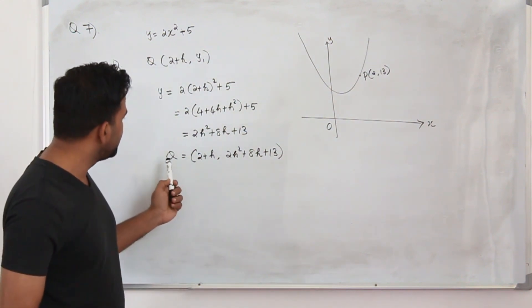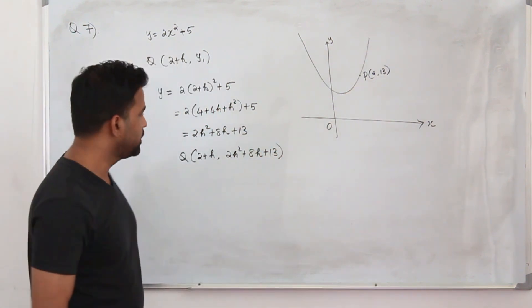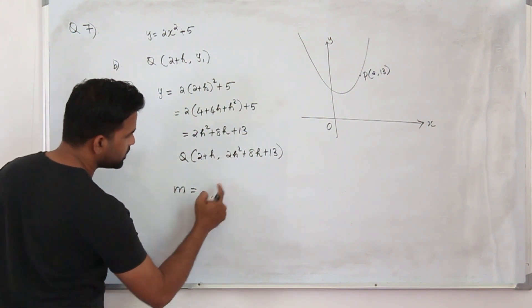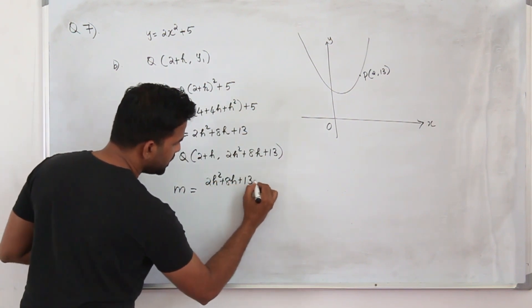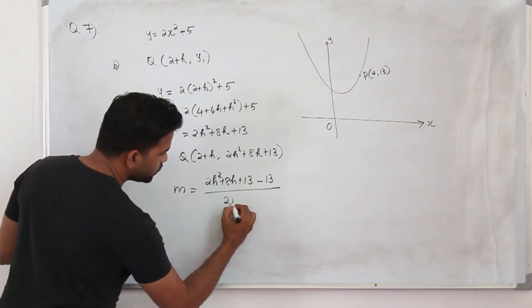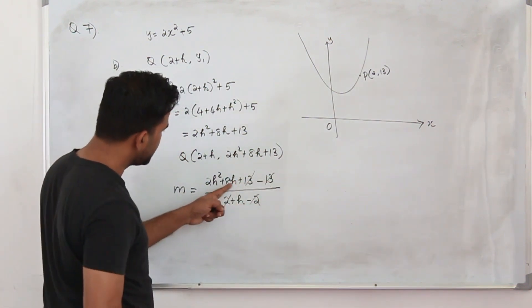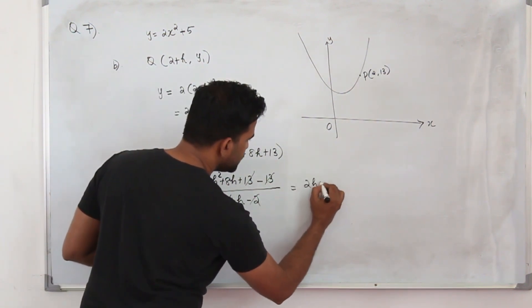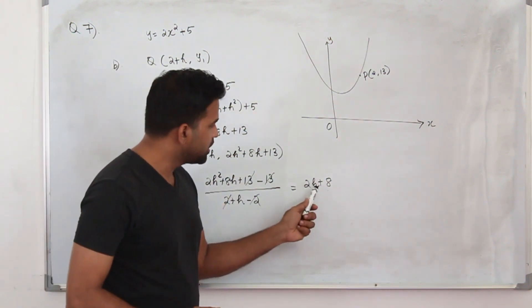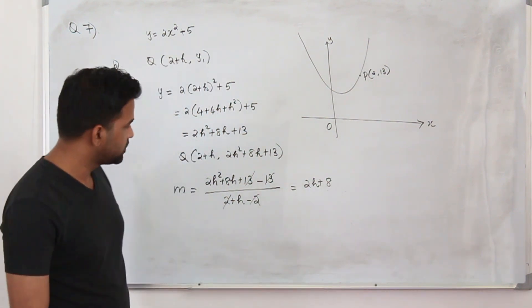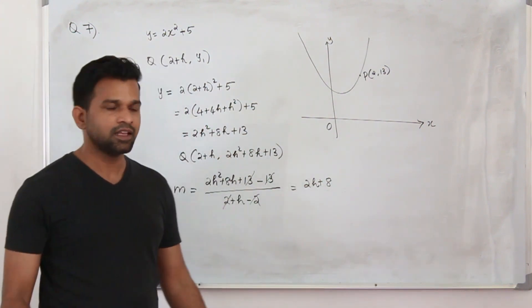Now we have the x and y coordinates of point Q. We can find the slope of the line joining Q and P. The slope or gradient M equals y2 minus y1 divided by x2 minus x1. So it's 2h squared plus 8h plus 13 minus 13, divided by (2 plus h) minus 2. Taking out h and cancelling, you get 2h plus 8. That's the gradient of the line PQ — that's the answer for Part B.